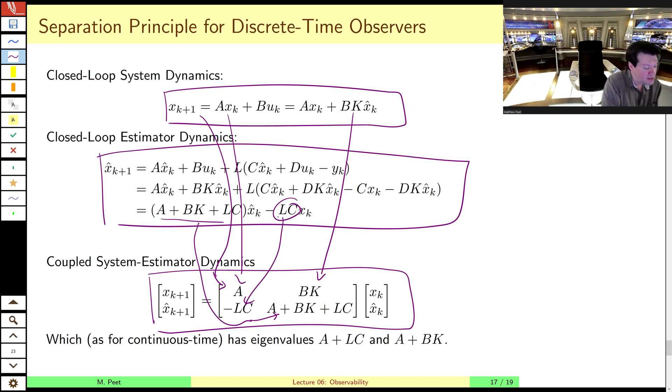So what can we say about this, the eigenvalues of this matrix here? Well, fortunately, this matrix has exactly the same form as continuous time. So in continuous time, we had x dot and x hat dot and something, something, something, something, x and x hat. And in the continuous time case, these were exactly the same matrices.